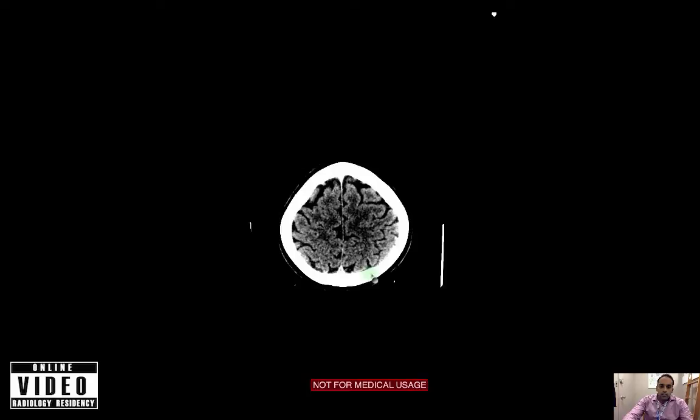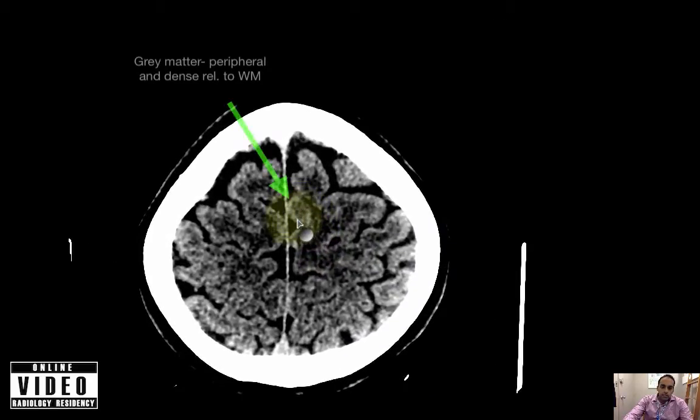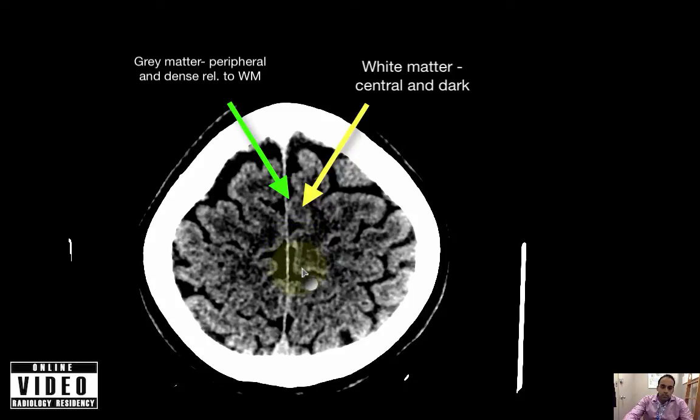Here at the high cortex you can note a distinction between the gray matter on the periphery of the gyrus and the white matter beneath it. Importantly, in the early stage of an ischemic stroke, you're going to see loss of that gray-white distinction.